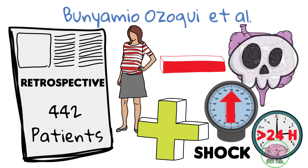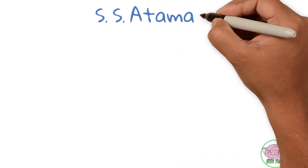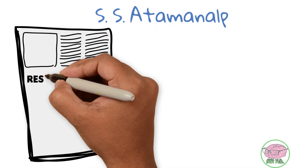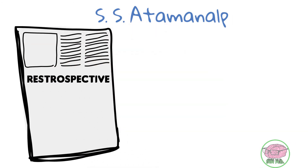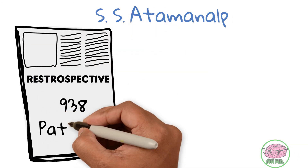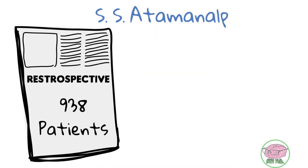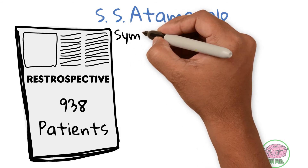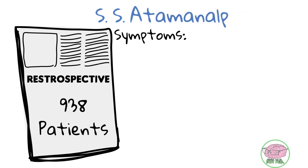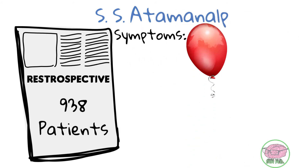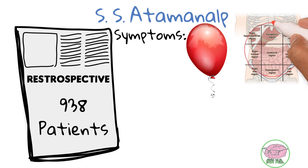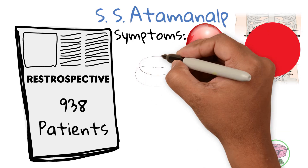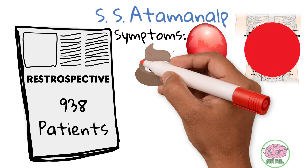In our patient's case, all of these risk factors were present. Atamanalp conducted a retrospective study of 938 patients and found that the most common symptoms are abdominal distension, abdominal pain, and constipation.